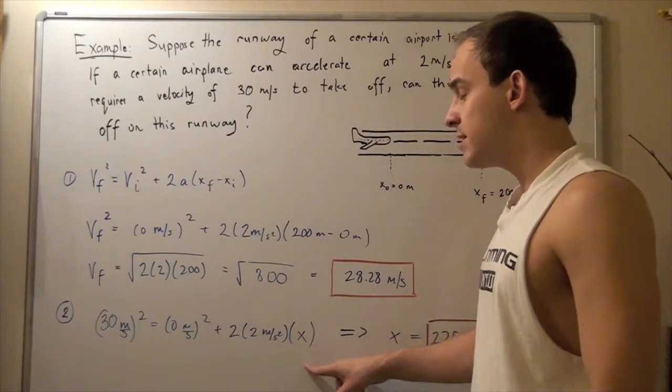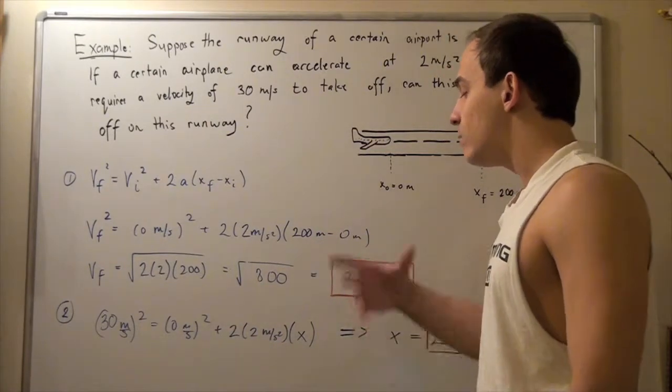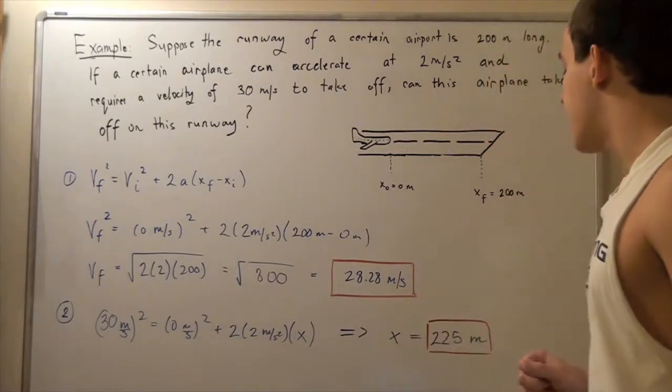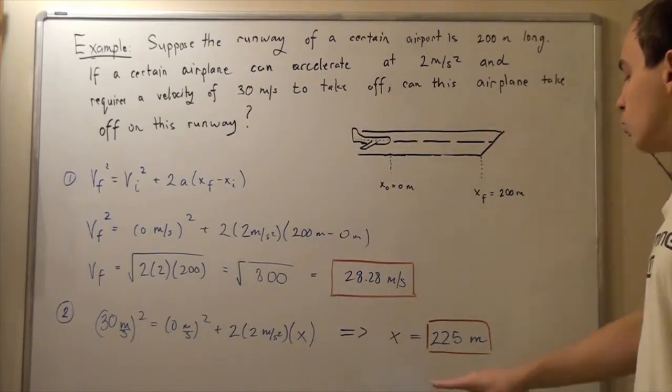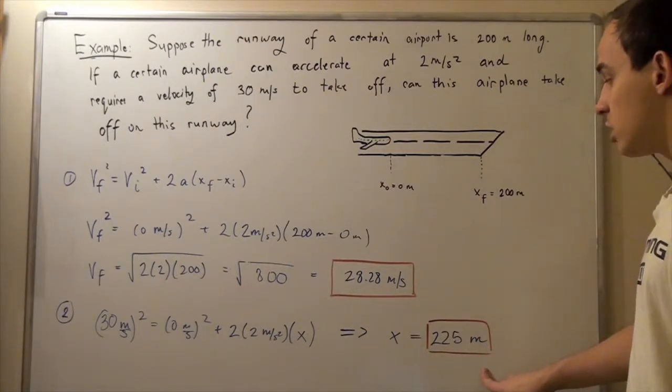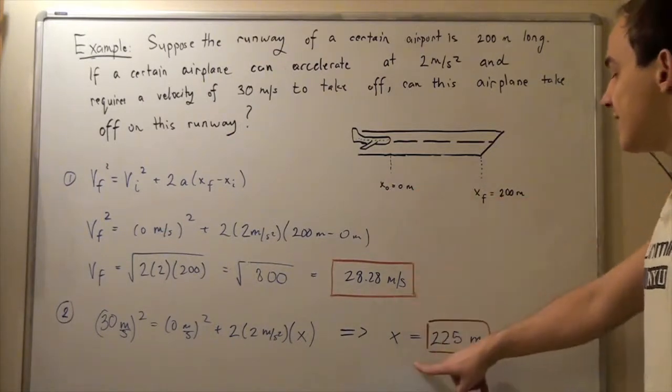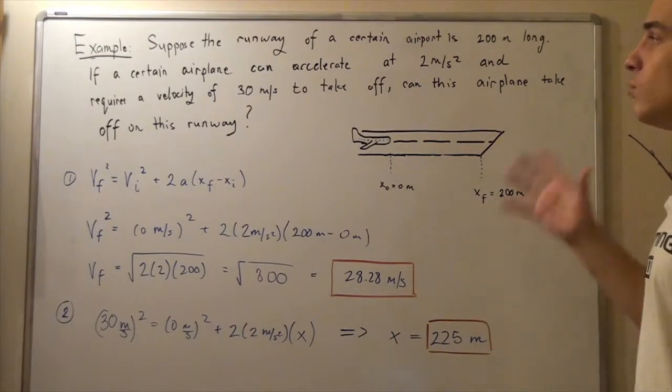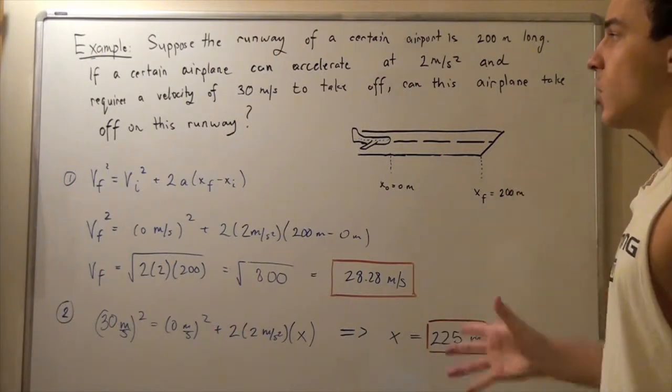Now our displacement is x. We plug it into the calculator and we solve for x, and we get that our runway should be 225 meters long. So if the runway is this long, then our airplane will in fact be able to take off.